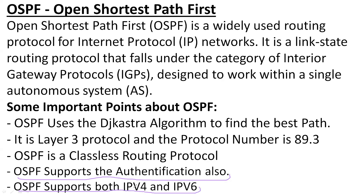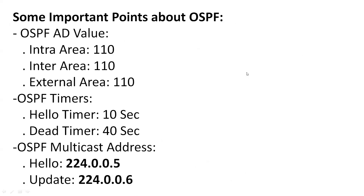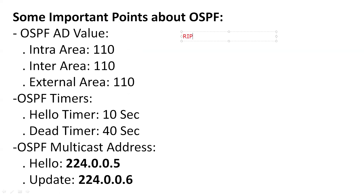Both IPv4 and IPv6 are supported by the OSPF protocol. The AD value of OSPF is 110 for internal, external, inter-area, and intra-area routes. For comparison, RIP has an AD value of 120, and EIGRP has an AD value of 90 for internal routes and 170 for external routes.